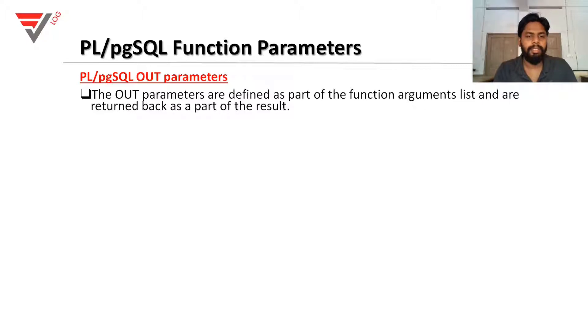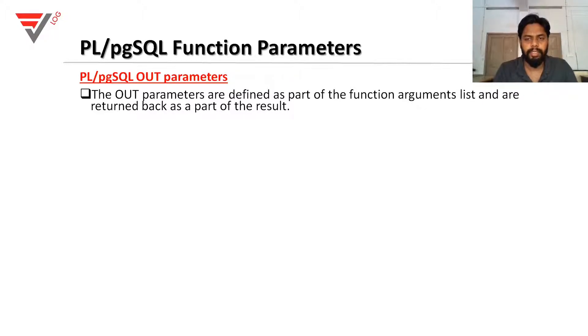The OUT parameters are defined as a part of the function argument list and are written back as a part of the result.